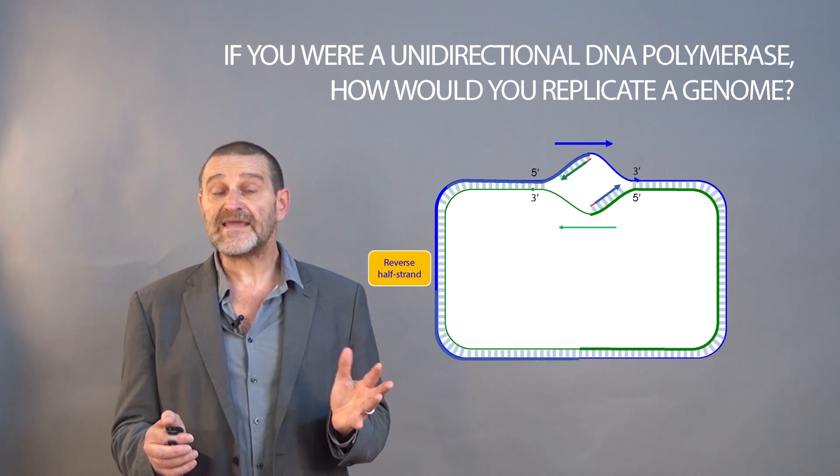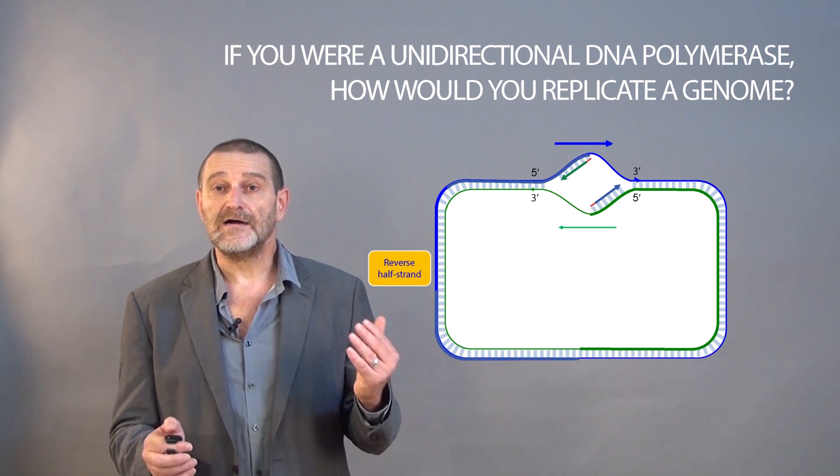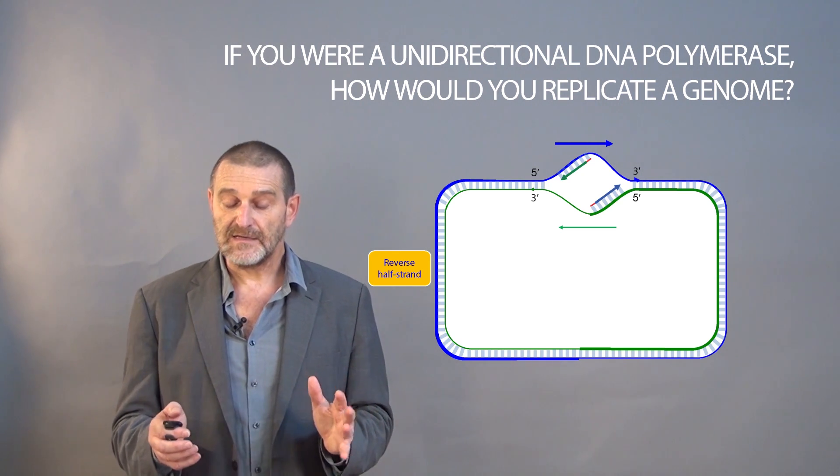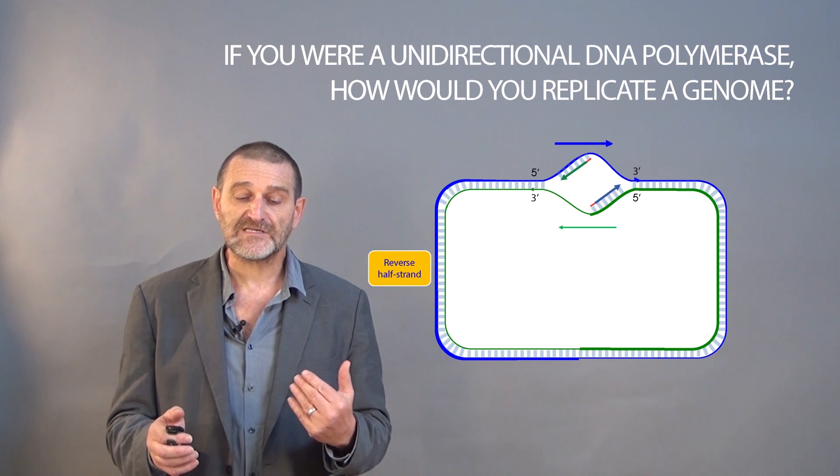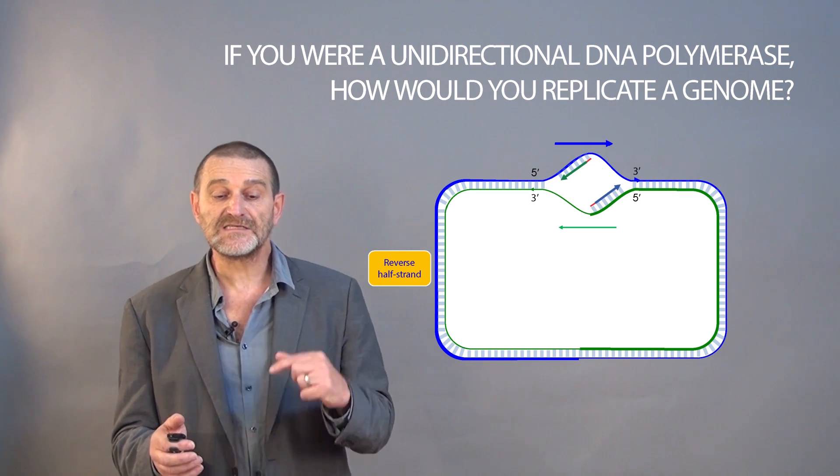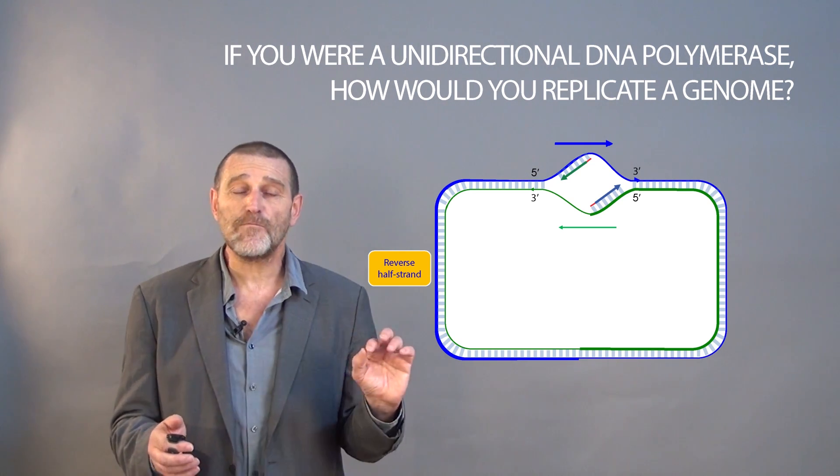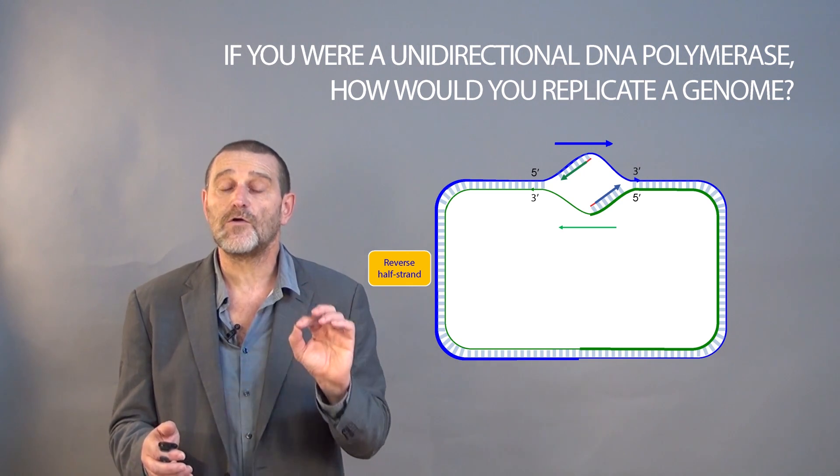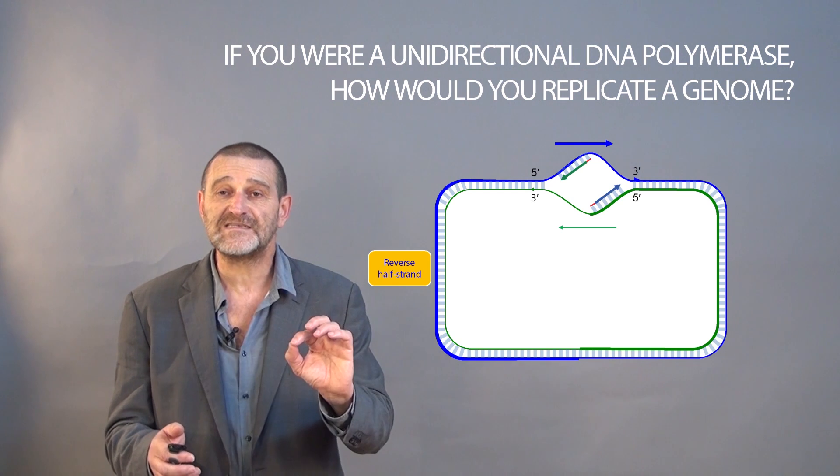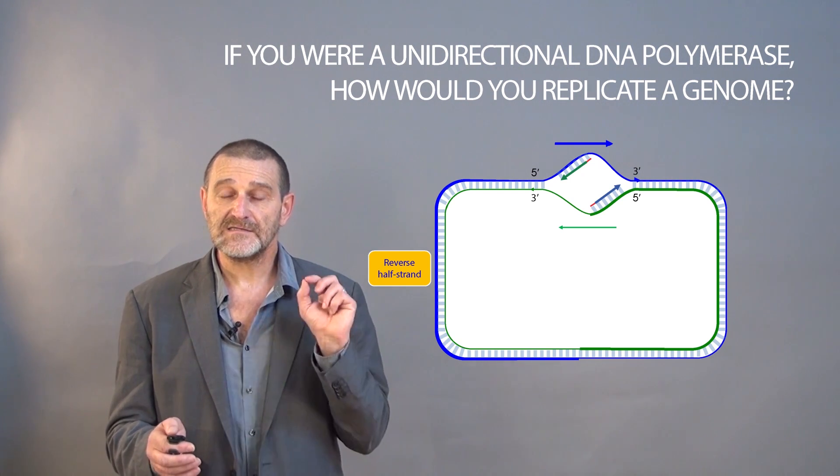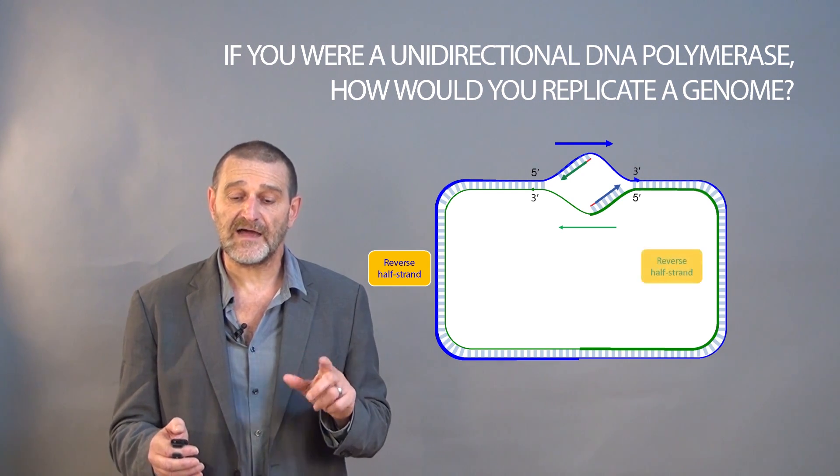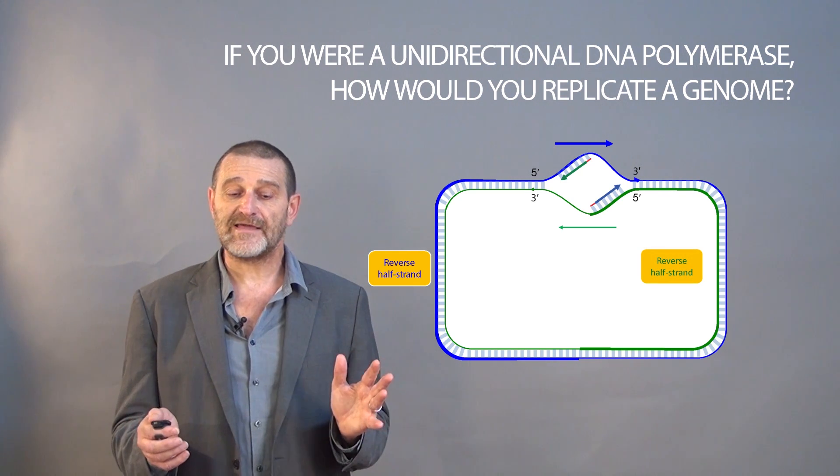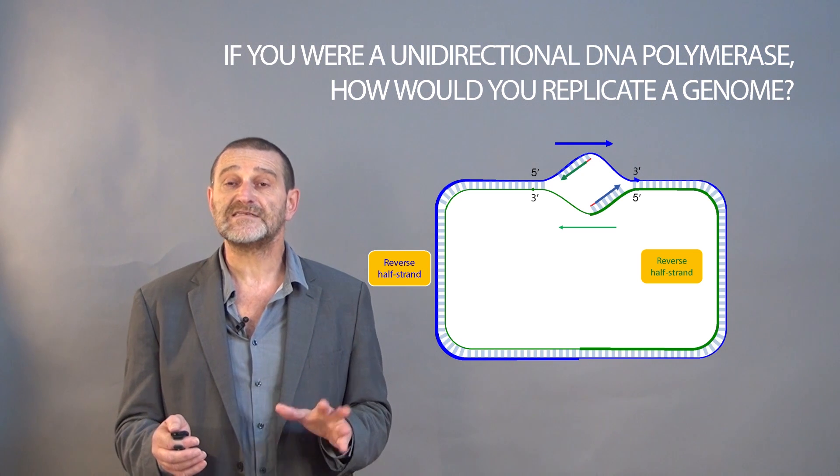We can classify DNA strands into four half strands. The blue strand that goes from origin to terminus is the reverse half strand. I have no problem replicating it because moving from origin to terminus goes in the opposite direction to DNA. Likewise, this thick green line also doesn't present any problem replicating. One DNA polymerase can accomplish it.